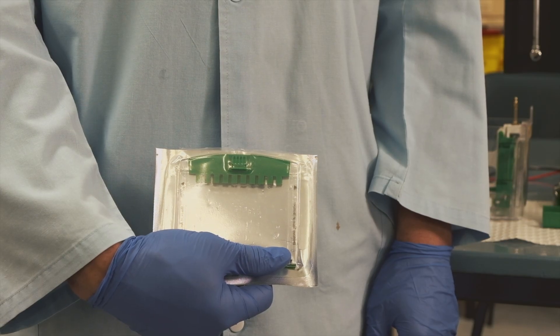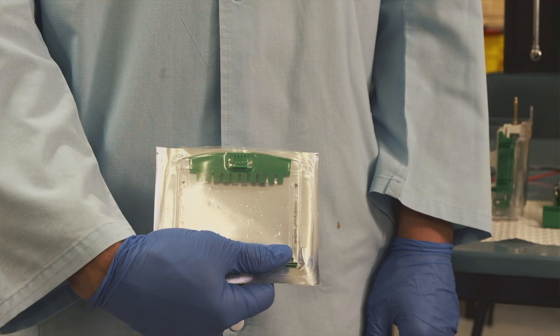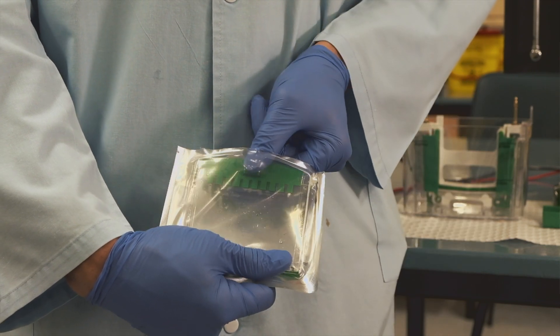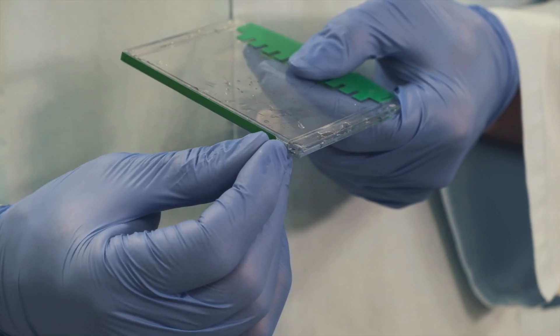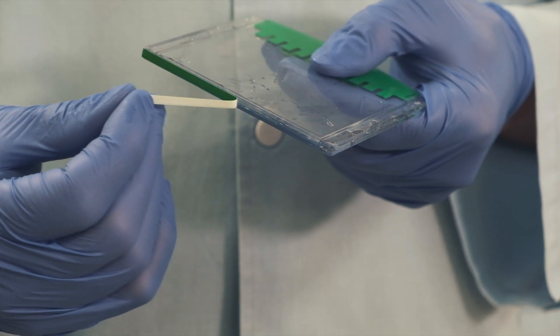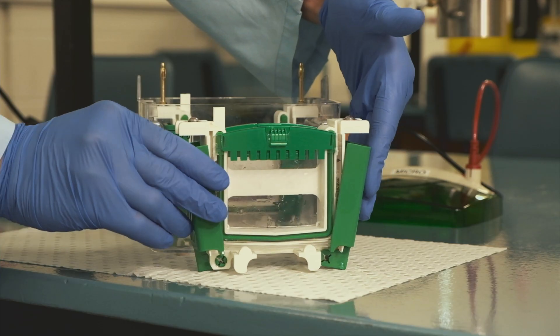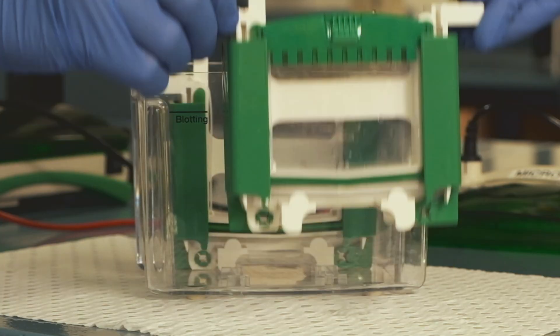Pre-made gels are usually sold in packets with some buffer in it to keep the gels moist. Before setting up the gels, it is extremely important that you remove the strip at the bottom of the gel. The strip is initially there to keep the gel in place. However, it will hinder the protein separation if it's left on during electrophoresis.